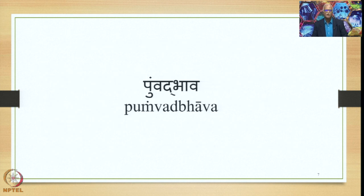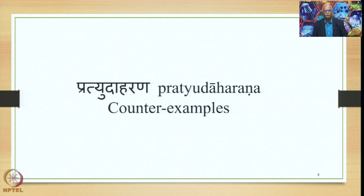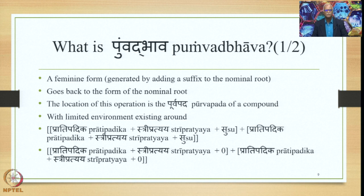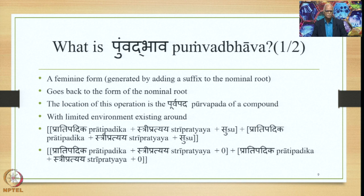We have been studying the Pumbad Bhava in the previous lectures, and previously we have studied Sutra 6.3.34, and also started studying the counter-examples or the Pratyadaharanas. What is Pumbad Bhava? A feminine form generated by adding a suffix to the nominal root goes back to the form of the nominal root — this is called Pumbad Bhava. The location of this operation is the Purvapada of a compound, with limited environment existing within the Purvapada as well as the Uttarapada.